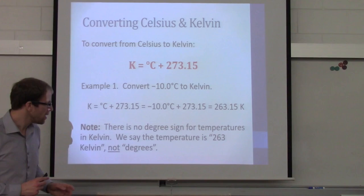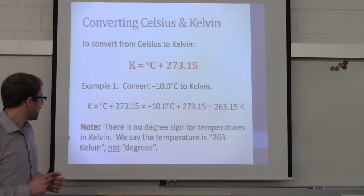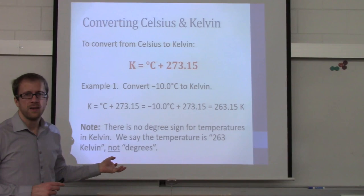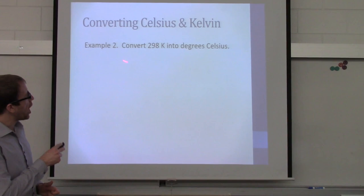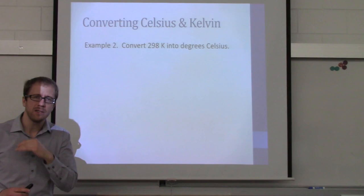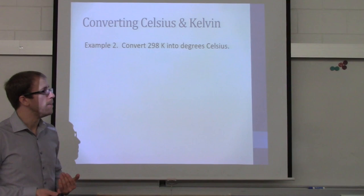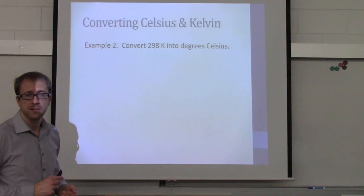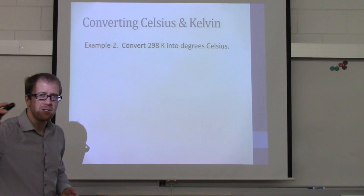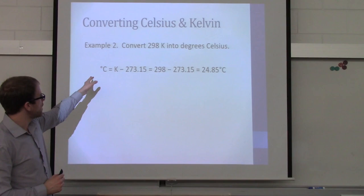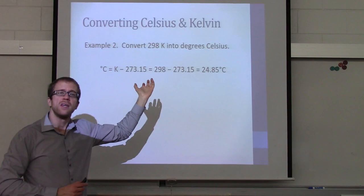A little tidbit: there is no degree sign for temperatures in Kelvin — we just say the temperature is 263 Kelvin. Now let's convert the opposite direction: 298 Kelvin into degrees Celsius. Your Kelvin temperature is always going to be higher, so we subtract 273.15. Degrees Celsius equals Kelvin minus 273.15, giving us 24.85 degrees Celsius. Pretty simple.